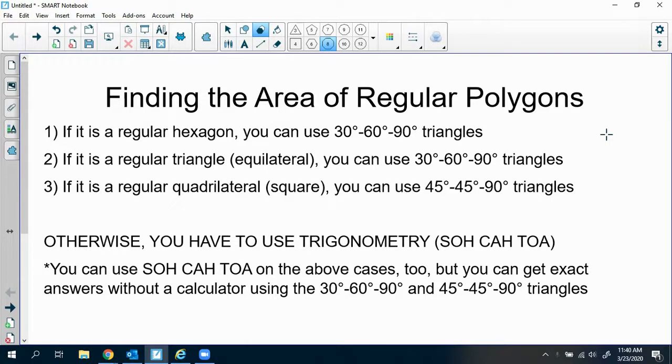If it's a regular hexagon, you can use 30-60-90 triangles. If it's an equilateral triangle, you can use 30-60-90 triangles, or you can manipulate it in order to get the base and the height.